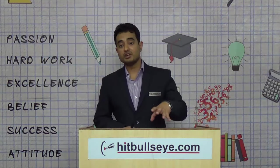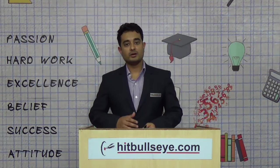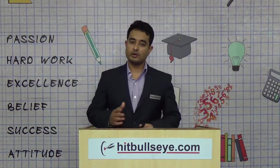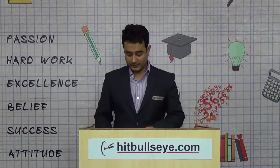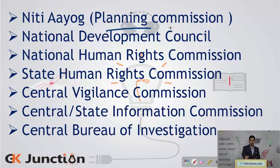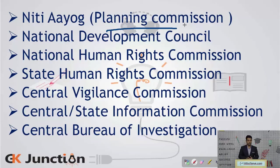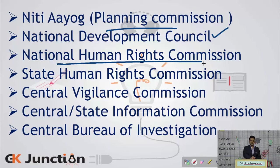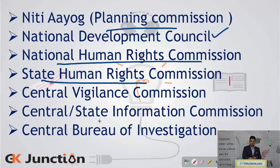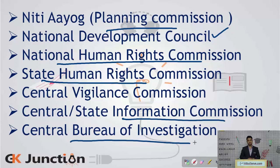Those are the 12 schedules. We shall now study the different statutory and non-constitutional bodies present in India. These include the Niti Aayog — which replaced the Planning Commission — the National Development Council, the National Human Rights Commission, the State Human Rights Commission, the Central Vigilance Commission, the State Information Commission and the Central Bureau of Investigation.